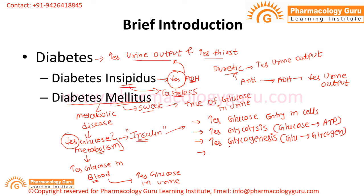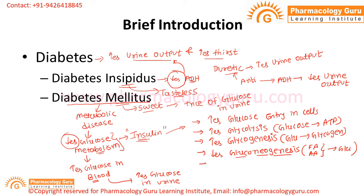There are two more processes inhibited by insulin. First, insulin suppresses hepatic gluconeogenesis — the production of glucose in the liver from fatty acids or amino acids. Second, insulin also reduces the breakdown of glycogen into glucose, which is called glycogenolysis. These are the ways through which insulin metabolizes glucose.